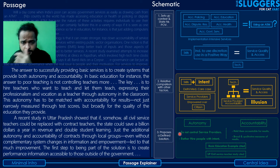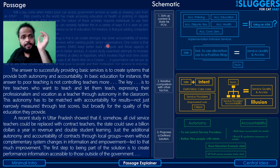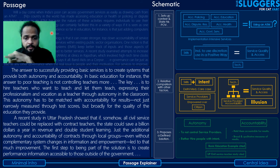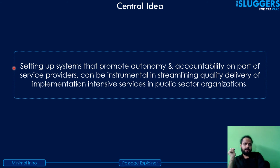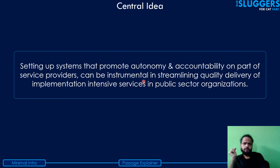The central idea of the passage can be summarized as follows: setting up systems that promote autonomy and accountability on the part of service providers can be instrumental in streamlining quality delivery of implementation-intensive services in public sector organizations.